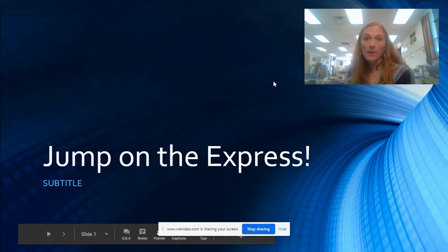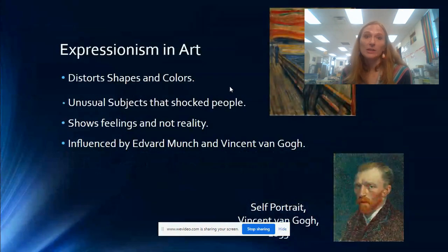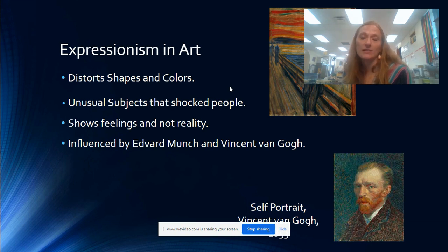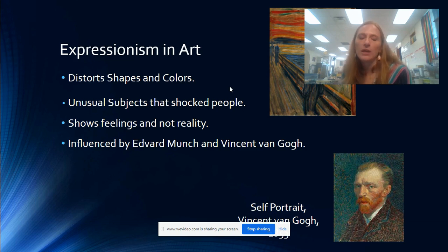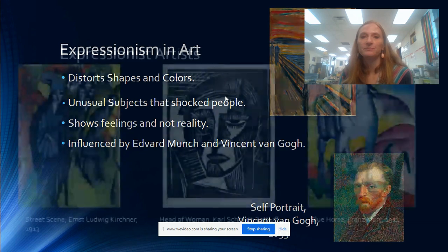Artists, today we're going to jump on the express — we are going to talk about expressionism. Expressionism in art was actually a movement in the 19th century. What you see in expressionism is that it distorts shapes and colors. It has unusual subjects that shocked people. It shows feelings and not reality, and it was influenced by the artists Edvard Munch and Vincent van Gogh.